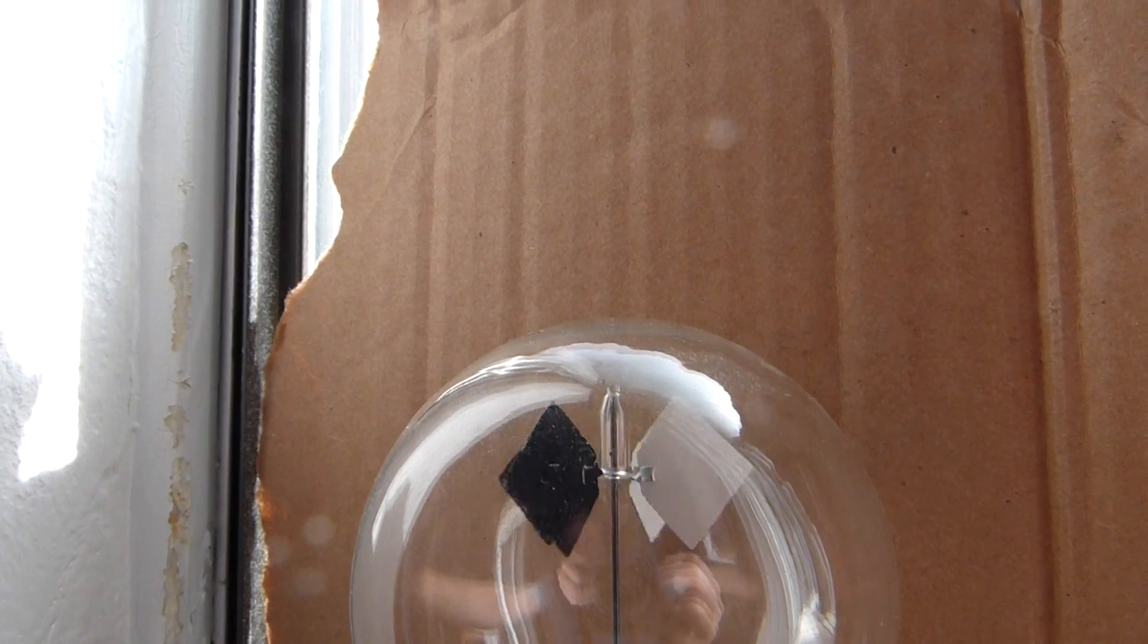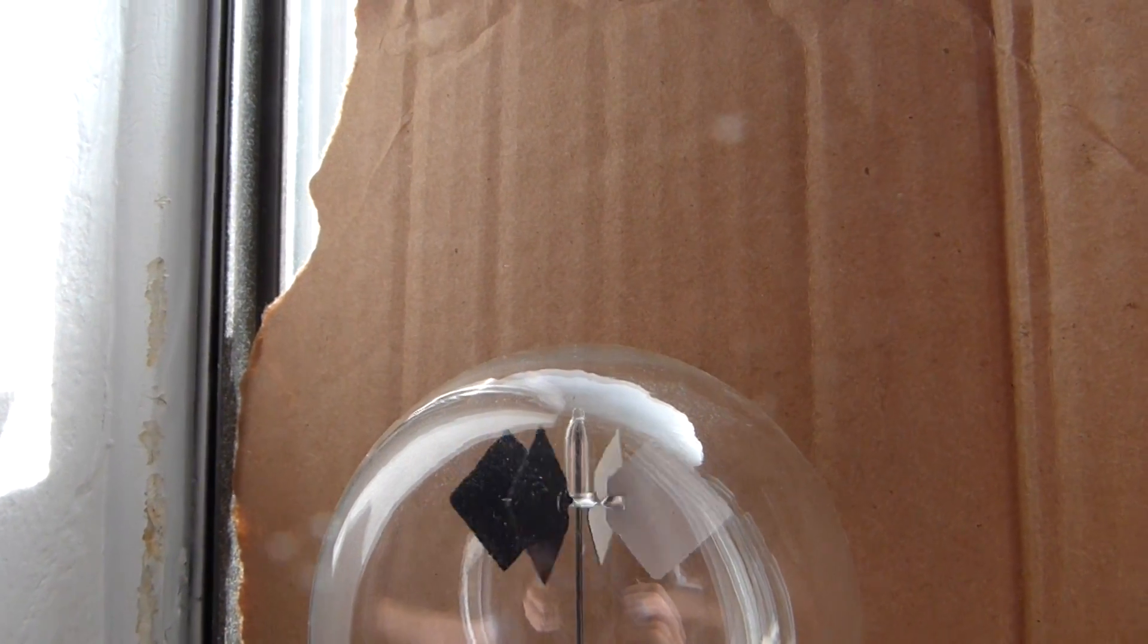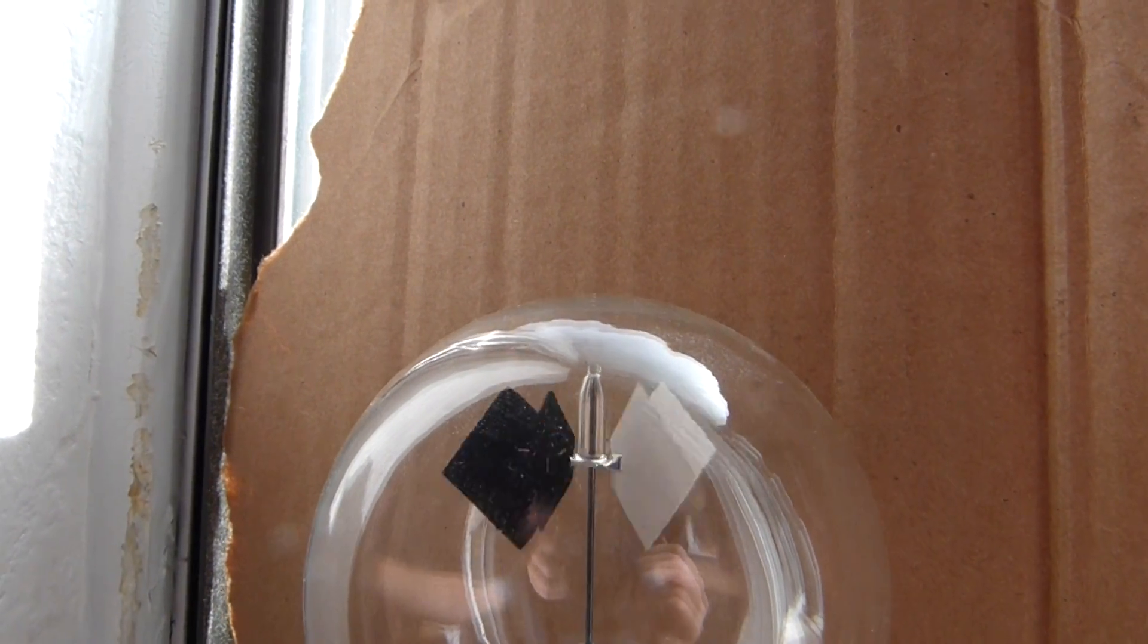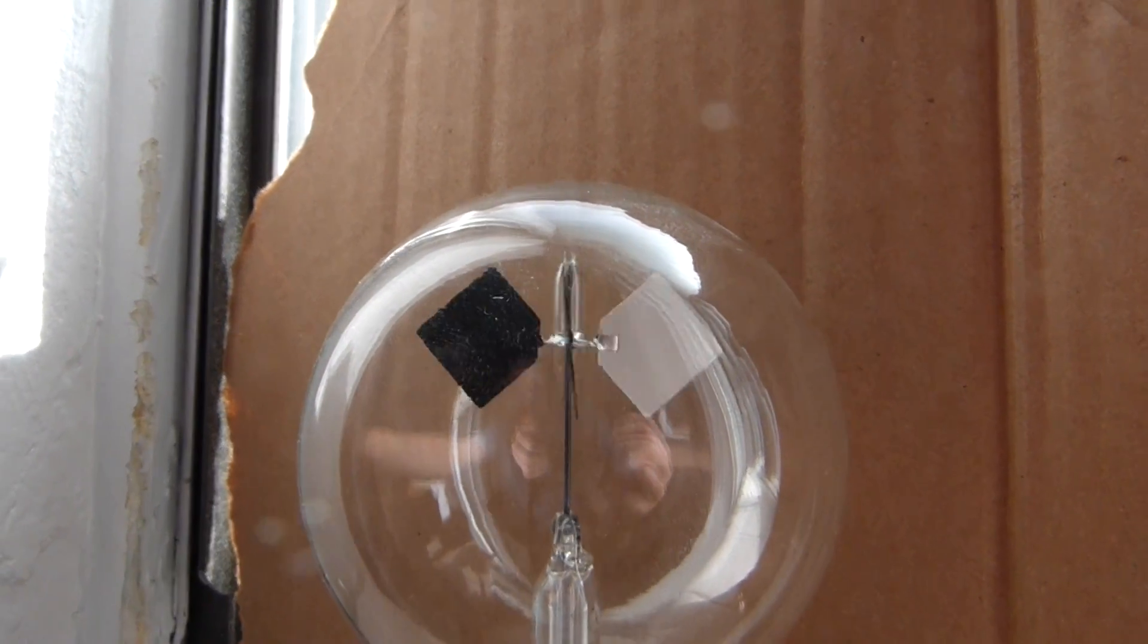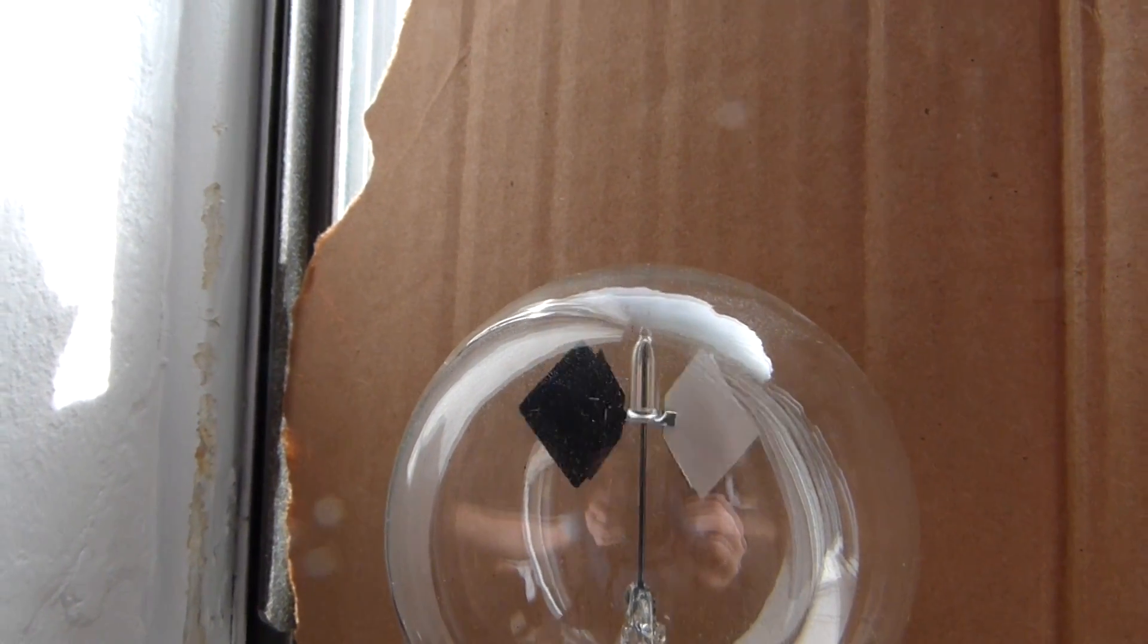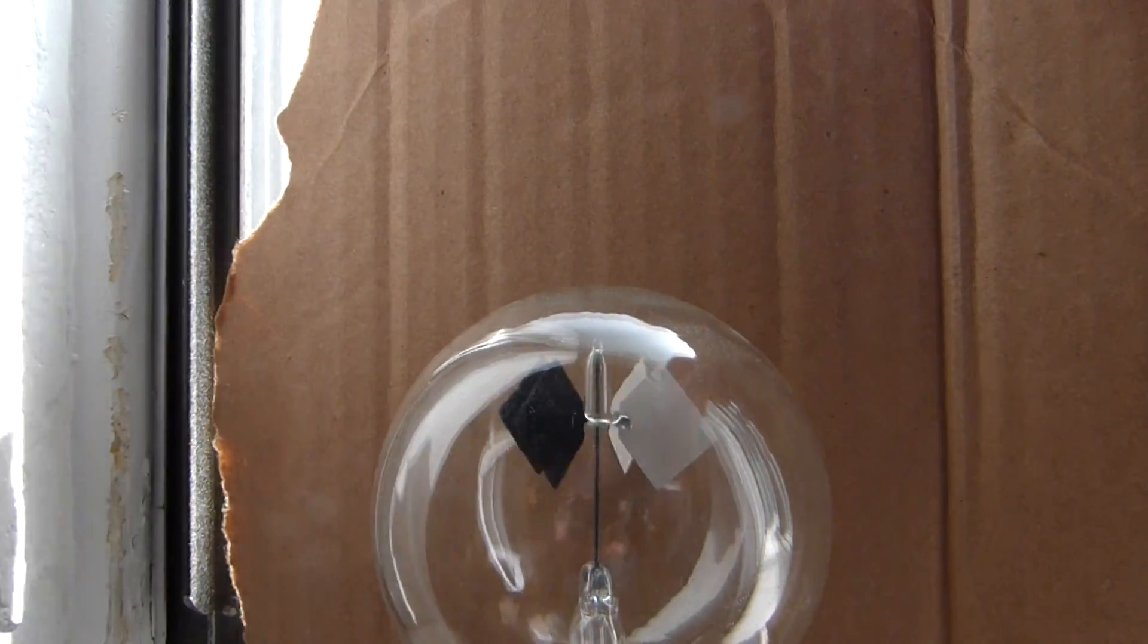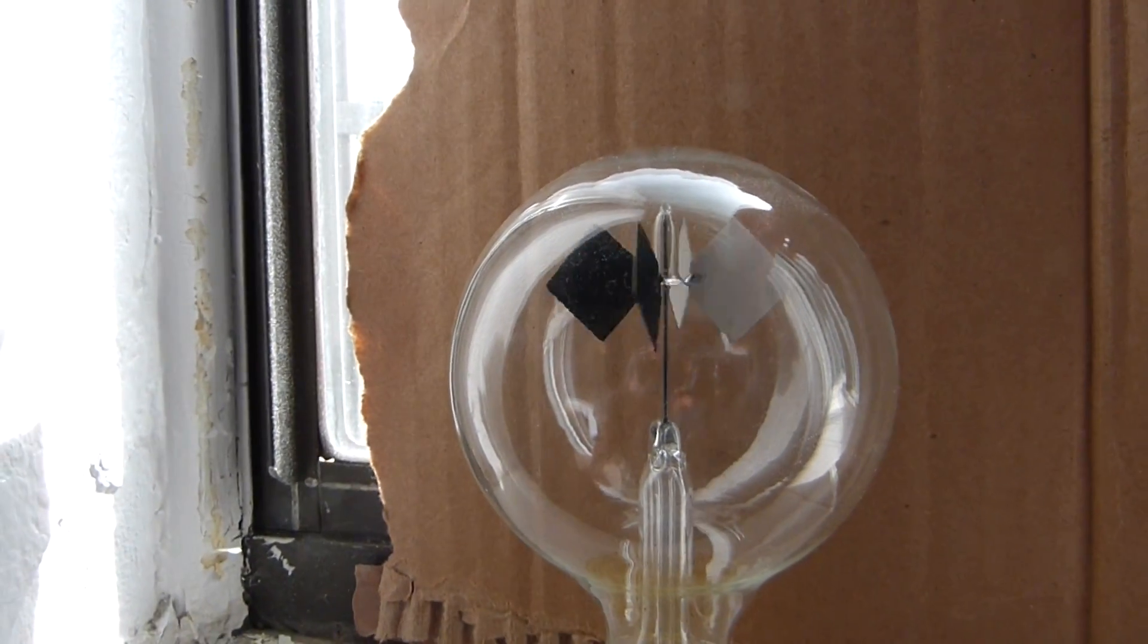The current explanation for how this thing works is it's basically just convection from the few remaining atoms of gas inside the bulb. They used to think that the light pushed off of the black surfaces. That's apparently not the case. At least that's not what mainly drives this thing.